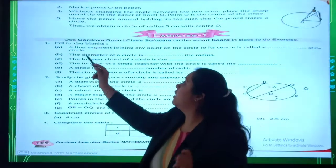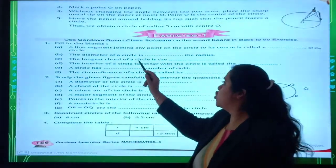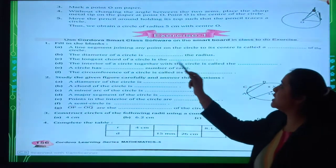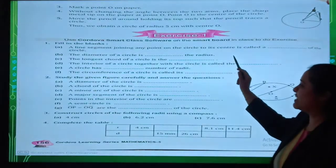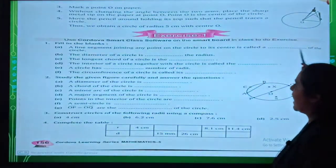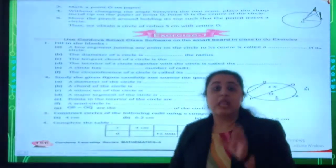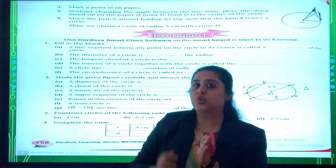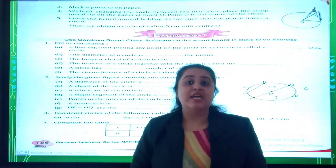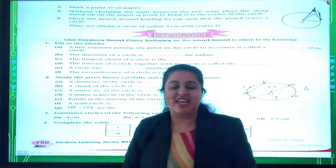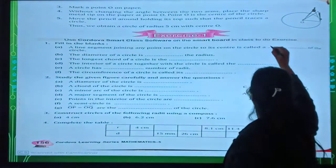First one. A line segment joining any point on the circle to its center is called a radius of a circle. A line segment from the center to the circumference of the circle is known as radius. Very good students.